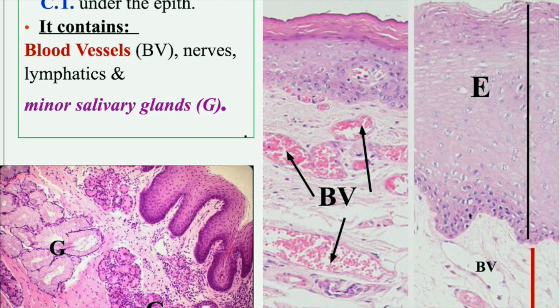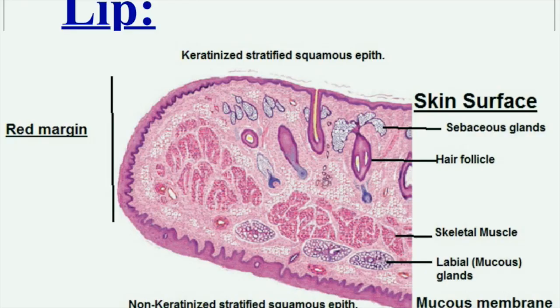The connective tissue underneath the epithelium is called the lamina propria. It is formed of loose connective tissue and contains blood vessels, nerves, and lymphatics, in addition to the minor salivary glands. These include serous acini and mucous acini of the minor salivary glands.